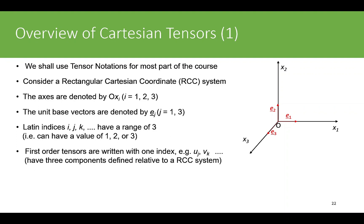They have three components, so you can have U1, U2, and U3 as components relative to a rectangular Cartesian coordinate system.